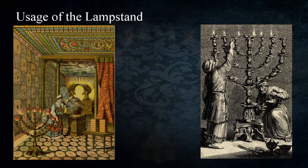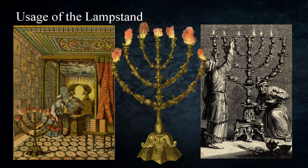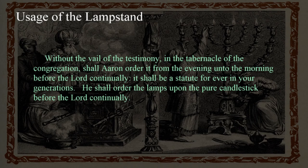From the descriptions and commands regarding the lampstand and its placement, the primary function is clearly to provide light. The tabernacle was probably dark inside, so there was a practical need for illumination. Its position directly opposite the table of showbread — representing God's presence with the Hebrews — emphasizes the importance of both objects, which were in front of the veil separating the holy place from the most holy place. God states: "Without the veil of the testimony, Aaron shall order it from the evening unto the morning before the Lord continually — it shall be a statute forever." (Leviticus 24:3–4) The phrase "from the evening unto the morning" might imply they burned only at night, but two things clarify this.